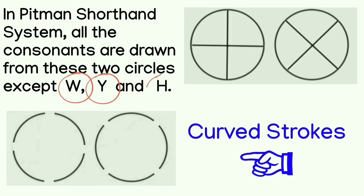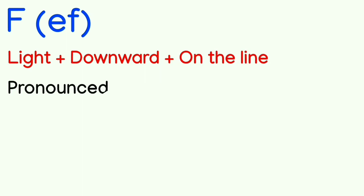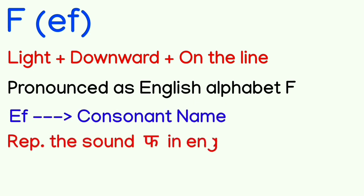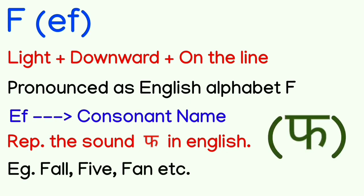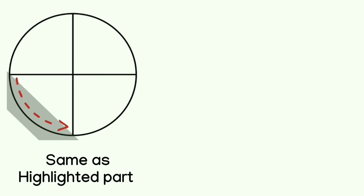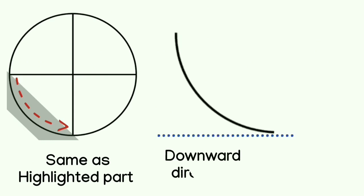Now let's go to the consonants. First is F. It is a light stroke made in the downward direction on the line. We pronounce this consonant as the English alphabet F. F is the name of this consonant. It represents the F sound in English — like fall, five, fan. We use the circle curve part to draw this symbol in the downward direction. So this is our F consonant.